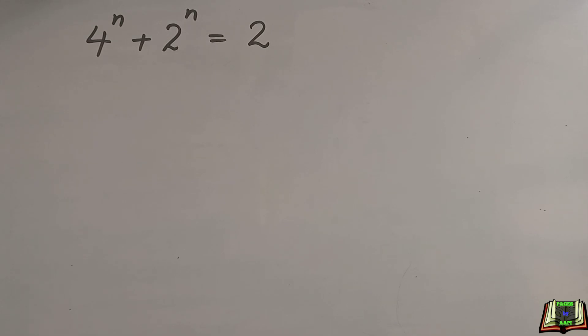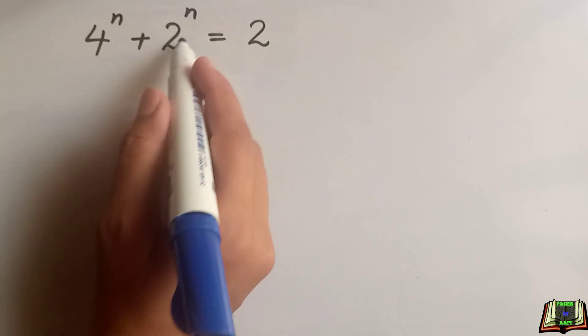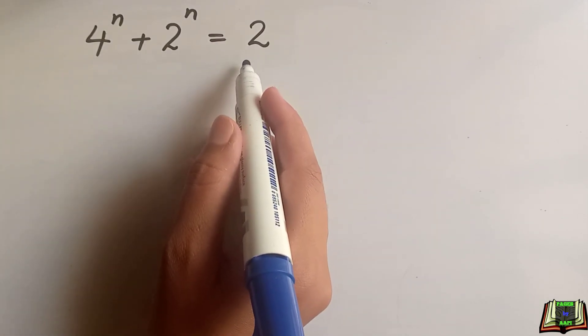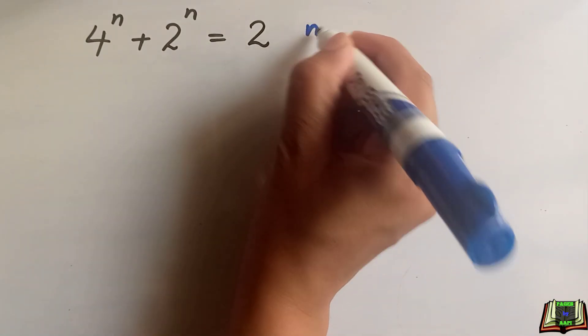Welcome back. Let's solve this nice exponential problem. If 4 to the power n plus 2 to the power n is equal to 2, then we are supposed to find the value of n in this question.